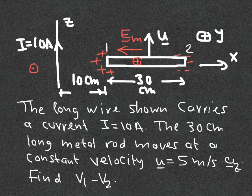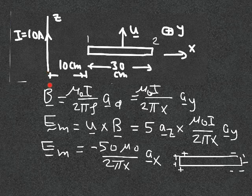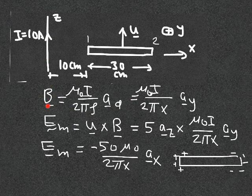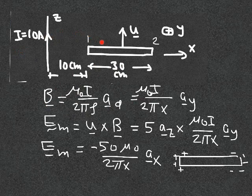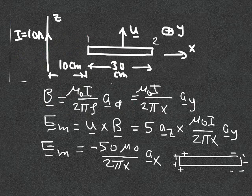Now let's look at the detailed solution. The magnetic flux density created by an infinite wire is B = (μ₀I)/(2πρ) · a_φ. At every point on the rod the field lines are circular — going out of the page on one side and into the page on the other — so a_φ is simply a_y. The distance from every point on the rod to the wire is x, so we replace ρ with x and a_φ with a_y.